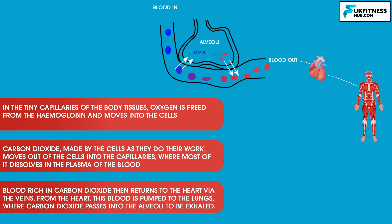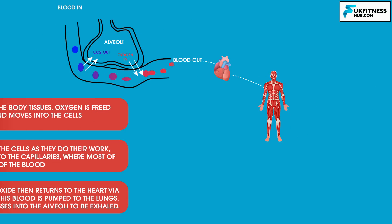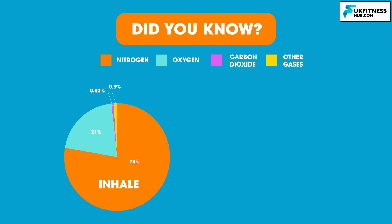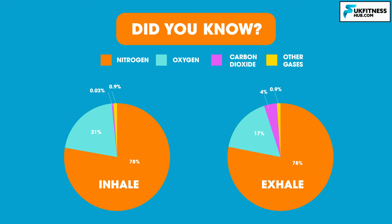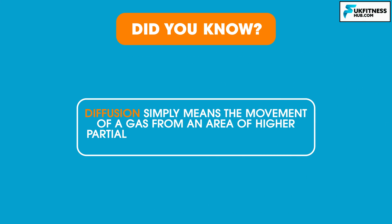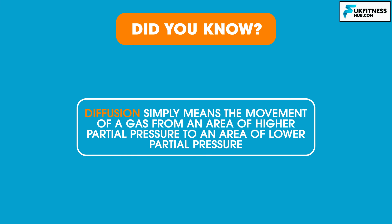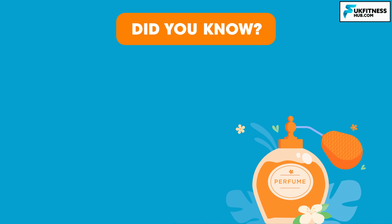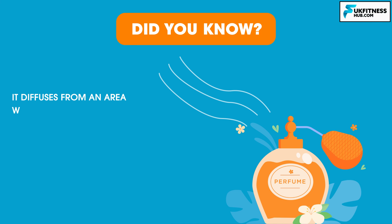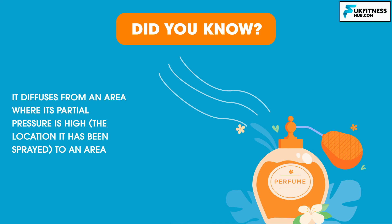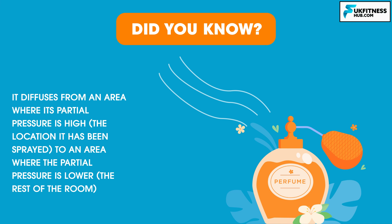Did you know that roughly 78% of the air you breathe in is nitrogen, 21% is oxygen, 0.03% carbon dioxide, and 0.9% other gases, whilst the air you breathe out is 78% nitrogen, 17% oxygen, 4% carbon dioxide, and 0.9% other gases? The term diffusion simply means the movement of a gas from an area of higher partial pressure to an area of lower partial pressure. For example, if someone sprays perfume, it will be smelt by others in the room because it diffuses from an area of high partial pressure to an area of lower partial pressure.